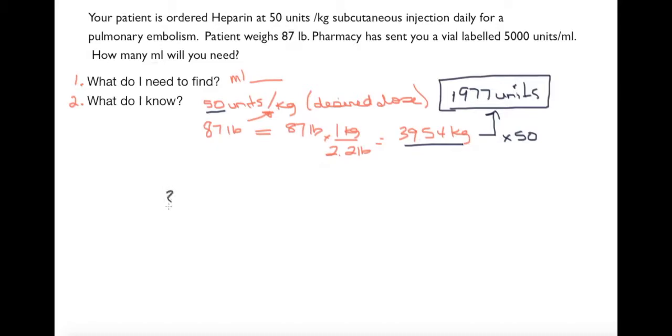Now I can set up a proportion. I'm wanting to solve for how many mls will give me 1977 units when I know 1 ml is 5,000 units. I'm going to cross multiply here to get rid of the denominators. 5,000 units times by my questionable ml is equal to 1977 units times by 1 ml.